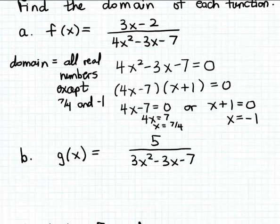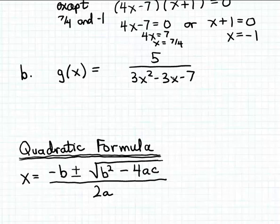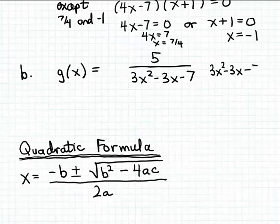Now let's look at part b, which is very similar. We want to find the domain of function g, whose formula is very similar to f from part a. We'll find the domain by finding values for x that make the denominator zero and excluding those from the domain. We take the denominator, 3x squared minus 3x minus 7, set it equal to zero, and solve the resulting quadratic equation. In this case, the expression on the left-hand side doesn't factor easily, so we'll use the quadratic formula.